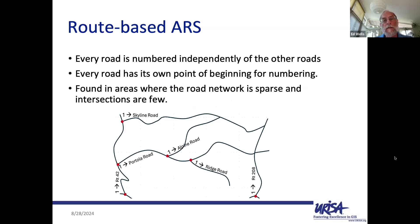The second is the route-based address reference system. You find it in mountainous or rugged terrain where the road network is sparse and there aren't many intersections. The simplest approach is to give every street its own point of beginning — where you start with number one — and go all the way to the end. It doesn't matter where it intersects another road; you just keep going until you reach the end. They're just too far apart to form a grid.